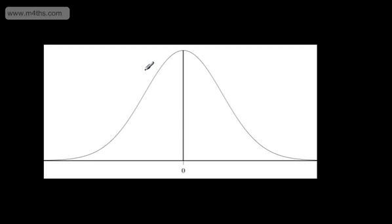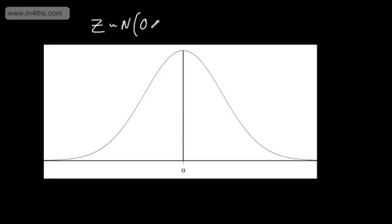In this video, we're going to look at the normal probability density function. Initially, our work will focus on the standard normal, and then in later videos, we'll look at other normal distributions and convert them to the standard normal. Let's start off with defining Z — I'm going to use a capital letter for Z — to be a continuous random variable that follows a normal distribution with mean 0 and a variance of 1.